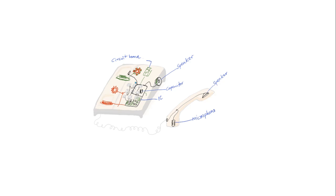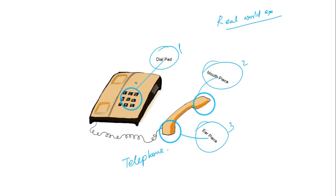We don't need to worry about the circuit board or integrated circuits, and we don't need to be any electronics expert to use a telephone. This is an example from real life. What makes this possible is abstraction — the telephone gives us abstractions like the dial pad, mouthpiece, and earpiece so that we don't have to worry about internal details, and any new user can start calling somebody right away.